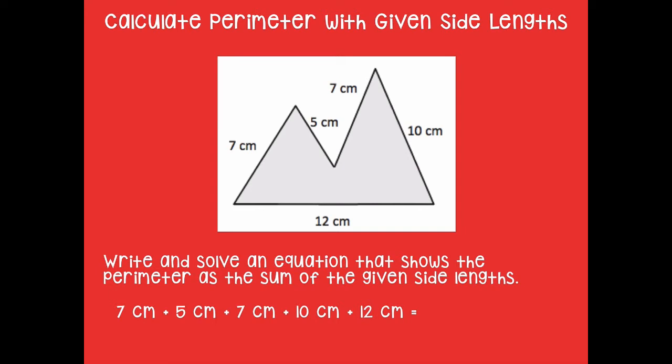Here we go. If you need more time, make sure you click pause. So here is my equation: 7 plus 5 plus 7 plus 10 plus 12. Again, those are all centimeters, and when I add those together my sum is 41 centimeters. So the perimeter of this shape is 41 centimeters. Did you guys get that too?